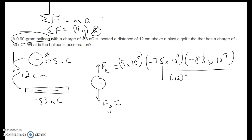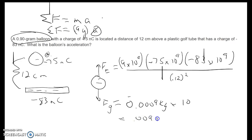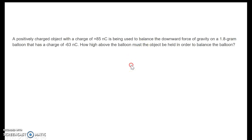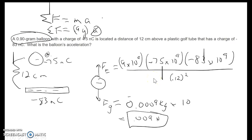The force of gravity is mass times g. Our mass is 0.9 grams, which is 0.0009 kilograms, times 10, giving a gravitational force of 0.009 newtons downward. Calculating the electrical force works out to 3.89×10⁻³ newtons upward.